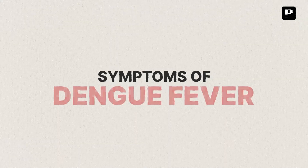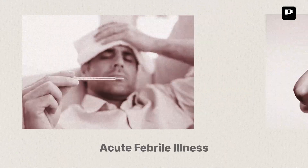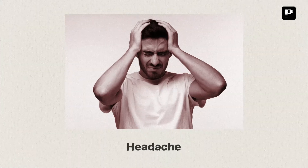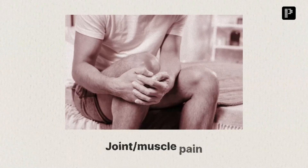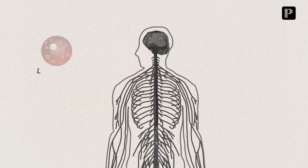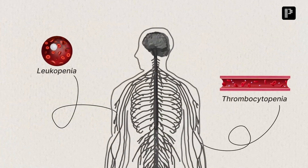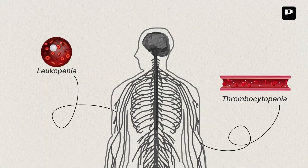First, let's look at how to suspect Dengue Fever in a patient. If the patient presents with acute febrile illness, headache, retro-orbital pain (pain behind the eyes), joint and muscle pain, rashes, leukopenia, and thrombocytopenia combined with patient history, these are strong indicators of Dengue Fever.